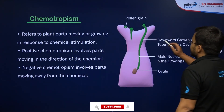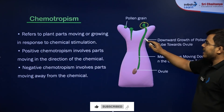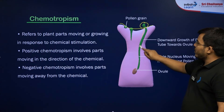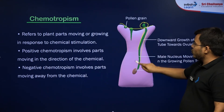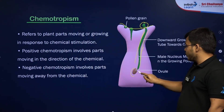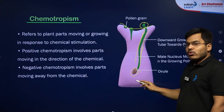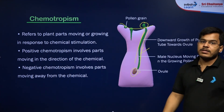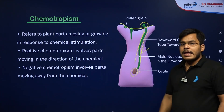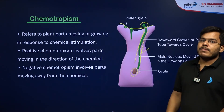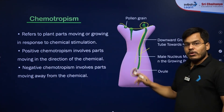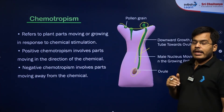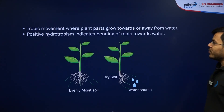Chemotropism can be seen during pollen germination. Pollen grains carrying male gametes land on the stigma of the female part of the flower and form a pollen tube. The direction of this pollen tube is stimulated by the ovule — the ovule releases certain chemicals, and the pollen tube is attracted to and moves towards those chemicals, making it a positive chemotropic movement.